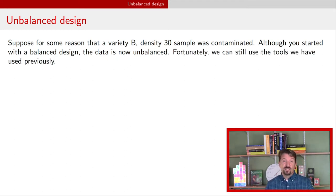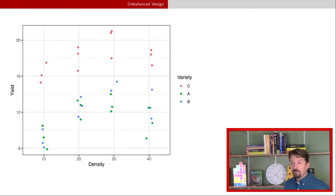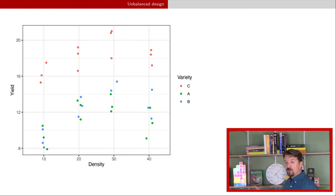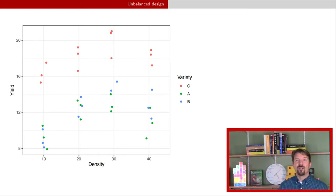Fortunately, this basically changes nothing about the approach we used before. We can look at the data — the only difference from the previous video is that there's one fewer observation in that variety-density combination. I will also update the plot for those who are colorblind, using symbols in addition to colors.